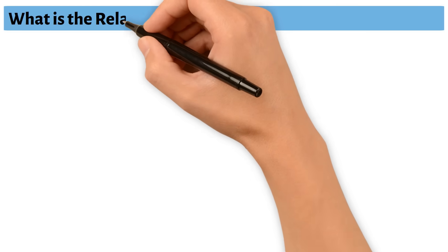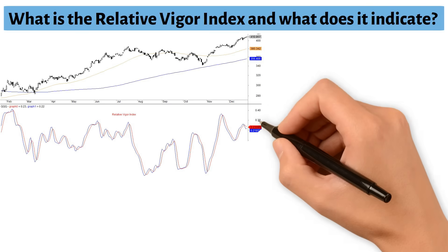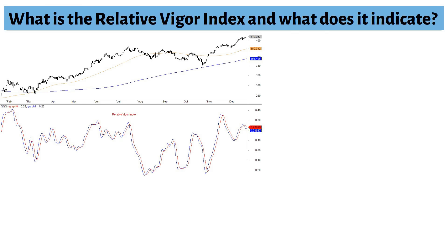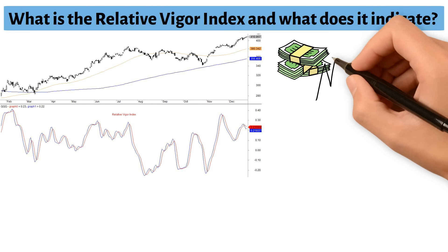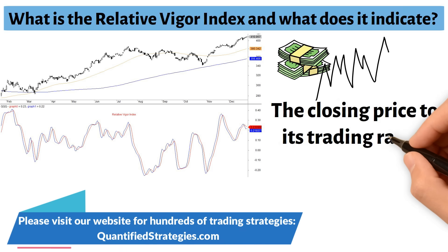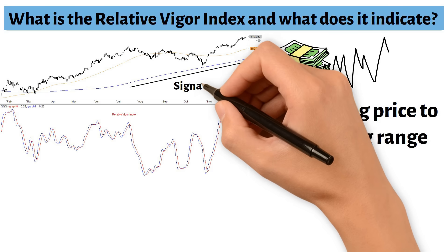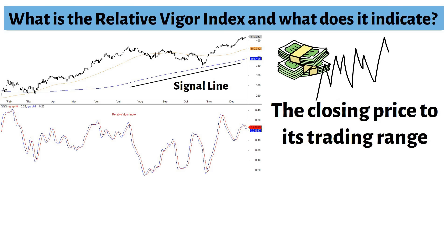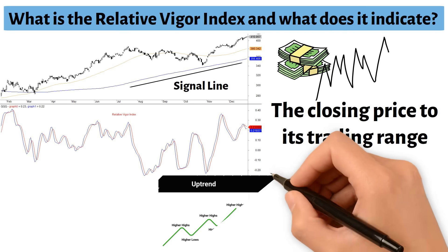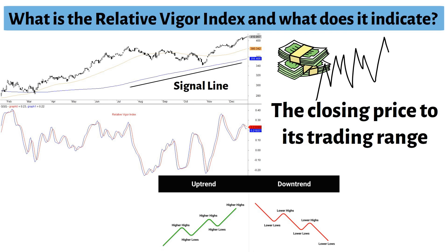First, what is the Relative Vigor Index and what does it indicate? The Relative Vigor Index is a technical indicator that measures the momentum of price movement by comparing the closing price to its trading range. It uses a simple moving average to smooth the results, called the signal line. It is based on the tendency of the price to close higher than it opens in an uptrend and close lower than it opens in a downtrend.